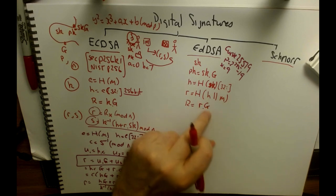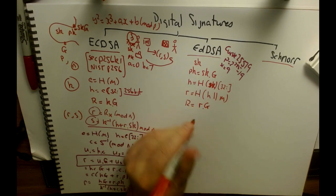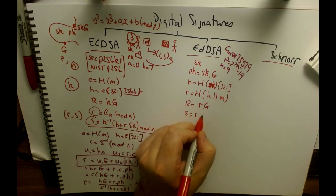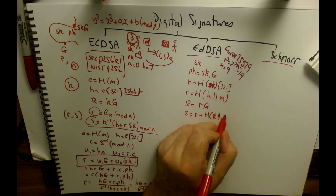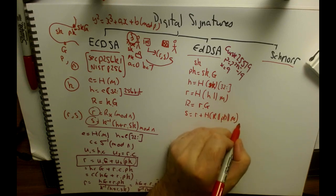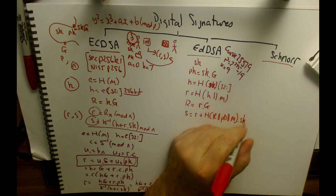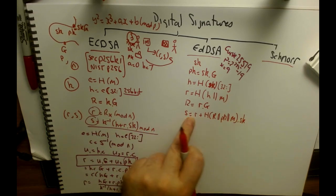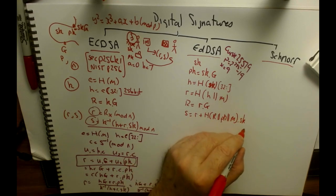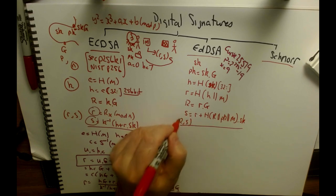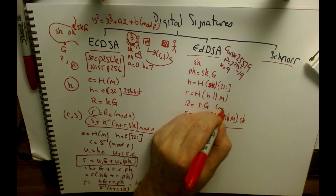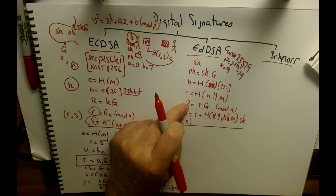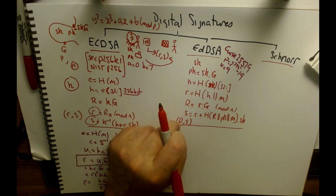We create an r value equal to r·G as before. The s value becomes r + Hash(r ‖ pk ‖ message) × sk, all mod n. We take the x-coordinate of the r point and do mod n to get the r value used in the signature. The signature is the pair (r, s).